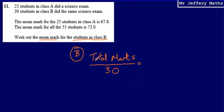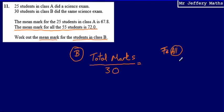The problem is I don't know what the total number of marks in class B was. But I can work that out because I know the mean for all 55 students was 72. From that, I can work out the total number of marks scored by all 55 students.